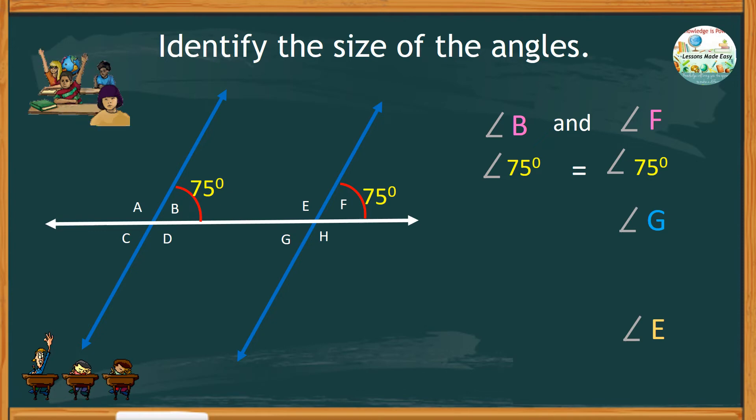Next, study the relationship of angle G with angle B. These angles are on the opposite sides of the transversal, so they are alternate interior angles, which means that they also must have the same measurement. If angle B is 75 degrees, then angle G is also 75 degrees.